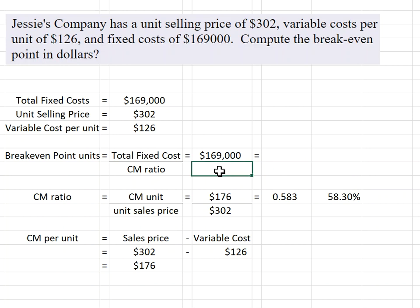Now we can divide the $169,000 by that 0.583, and that will tell me how many units I need to sell to break even. I'm sorry, dollars. I need to do $289,989 in sales in order just to break even. That's my break-even point.